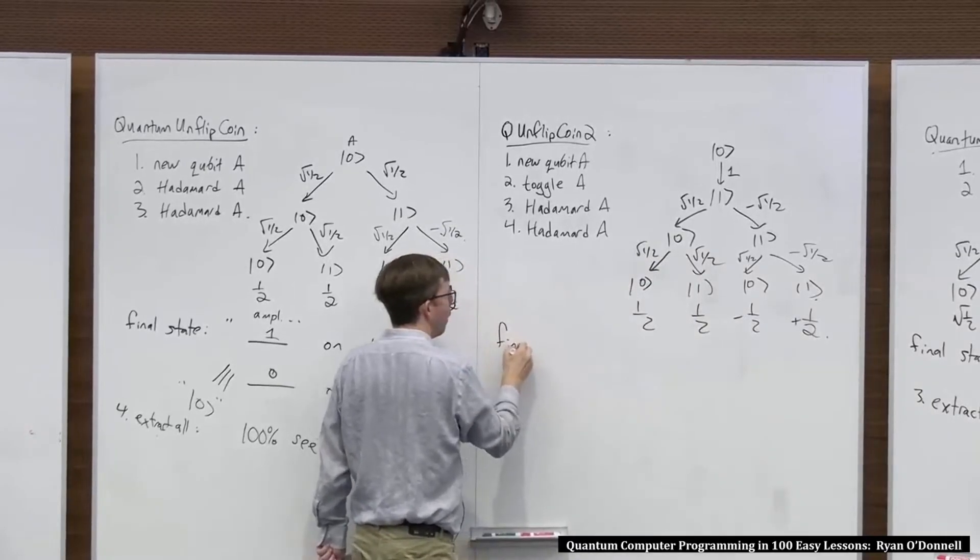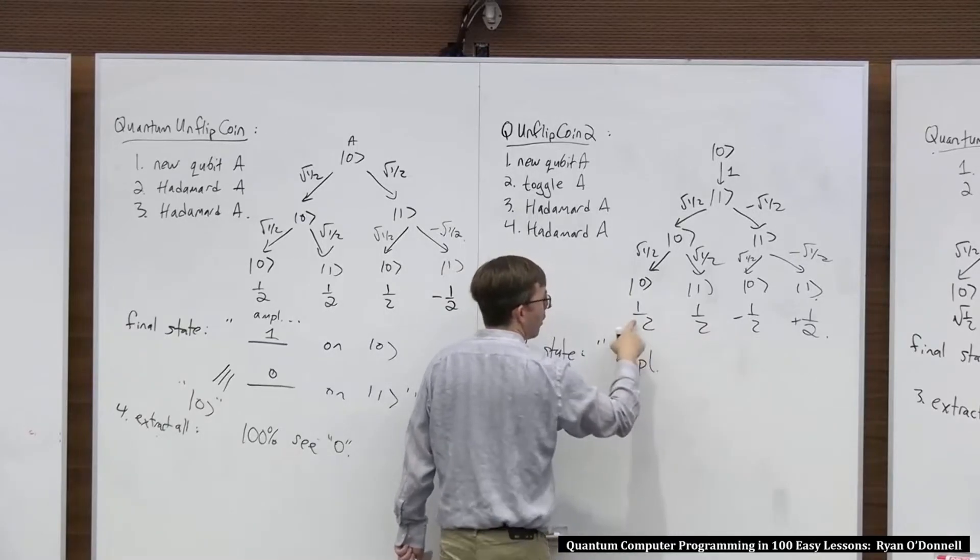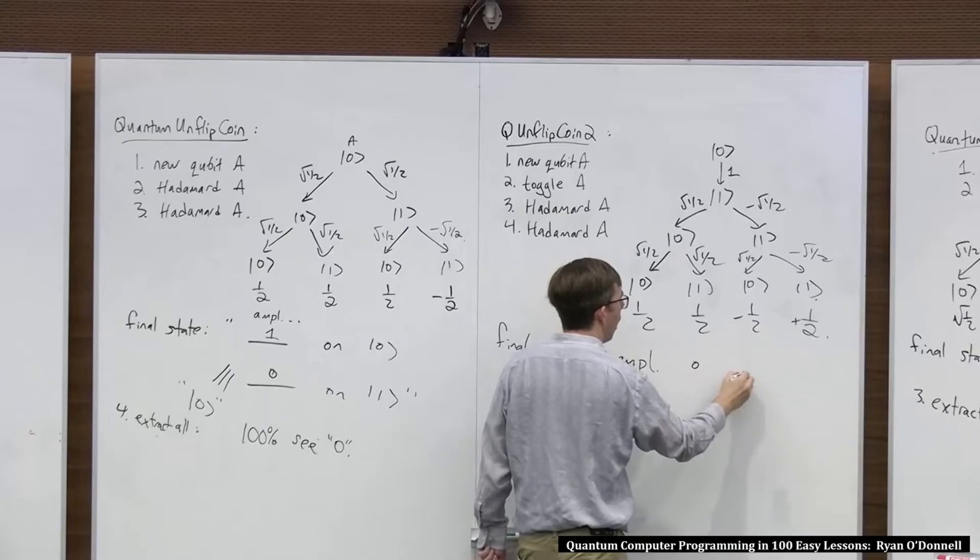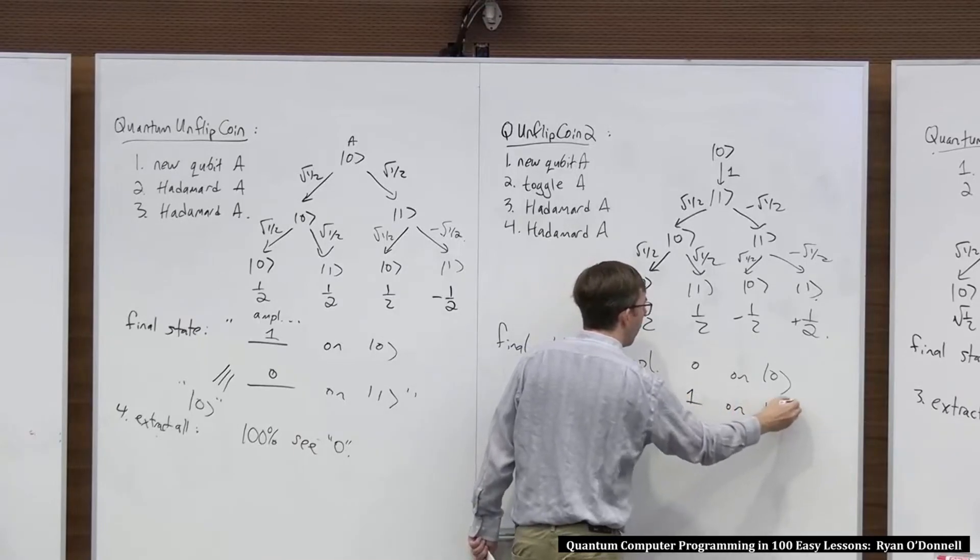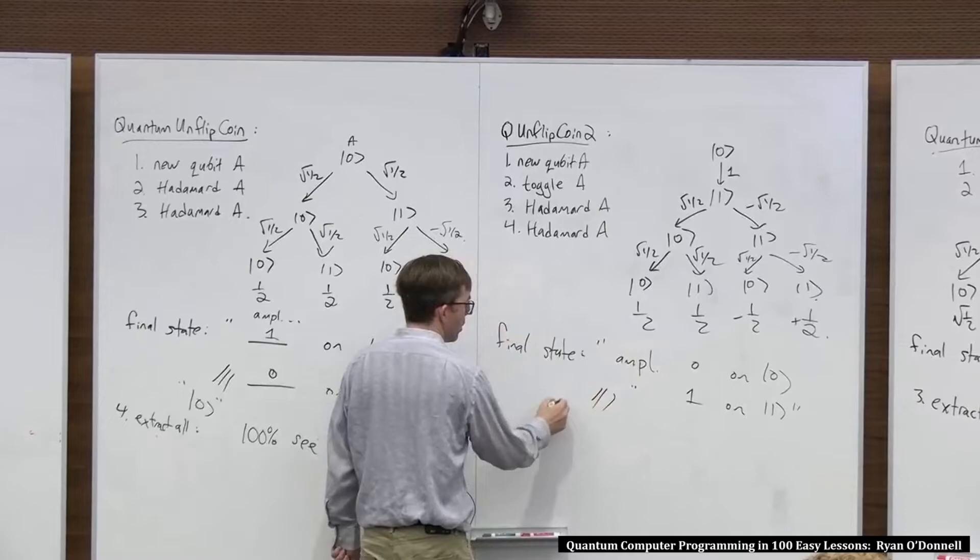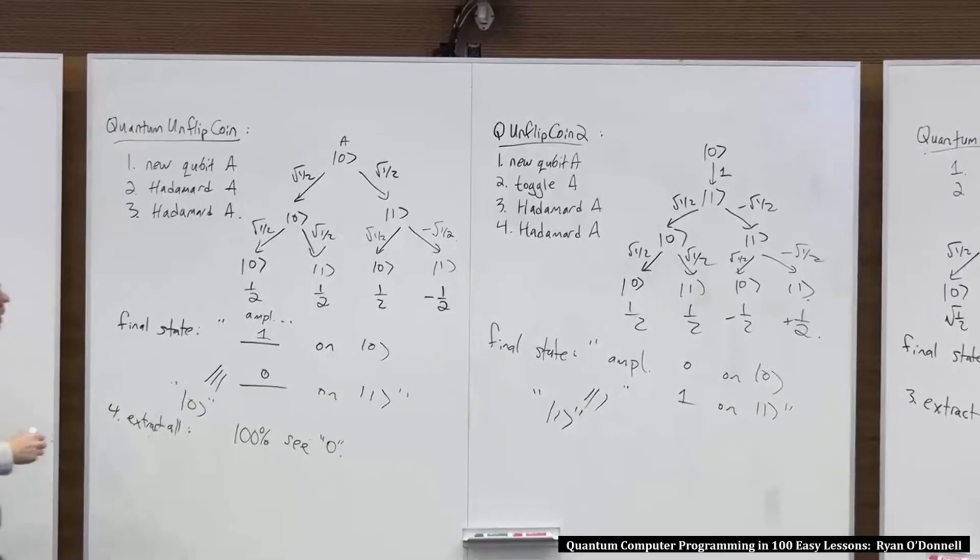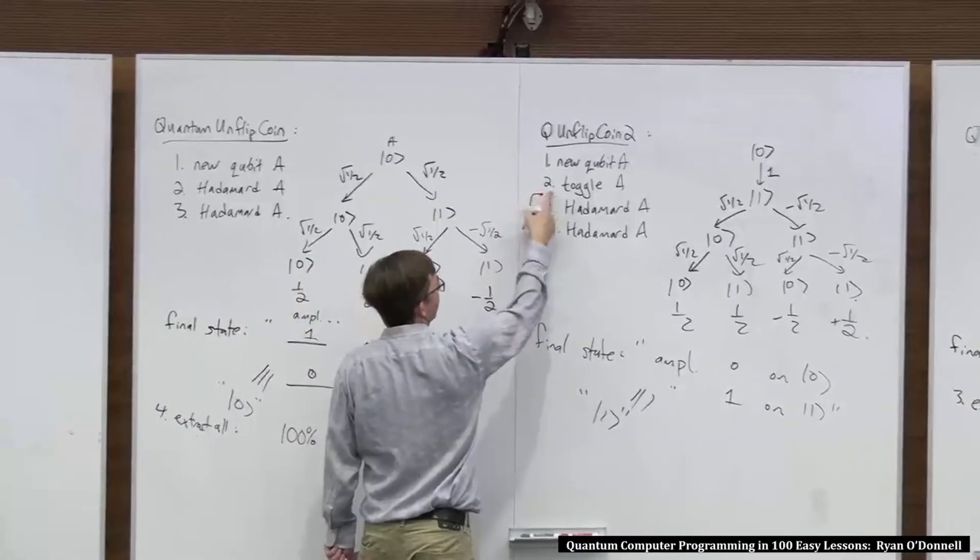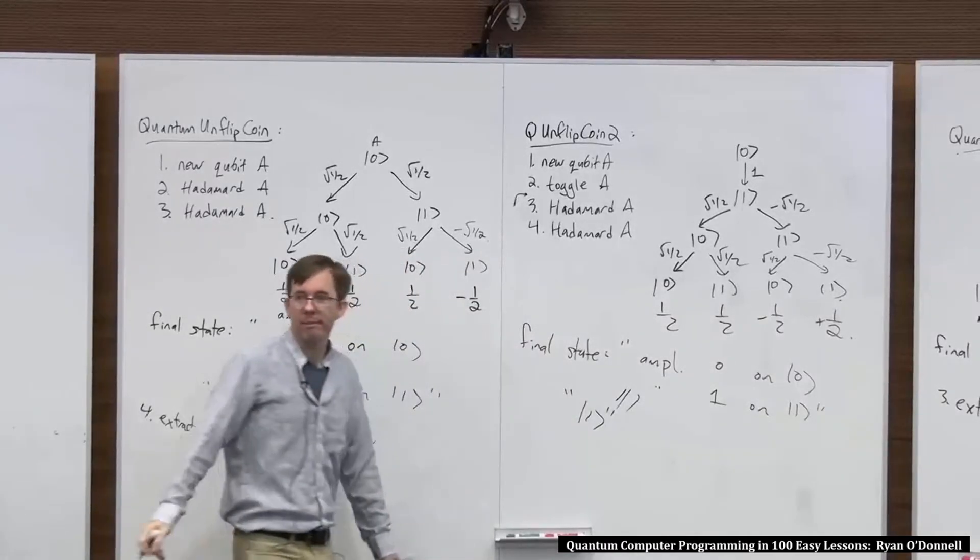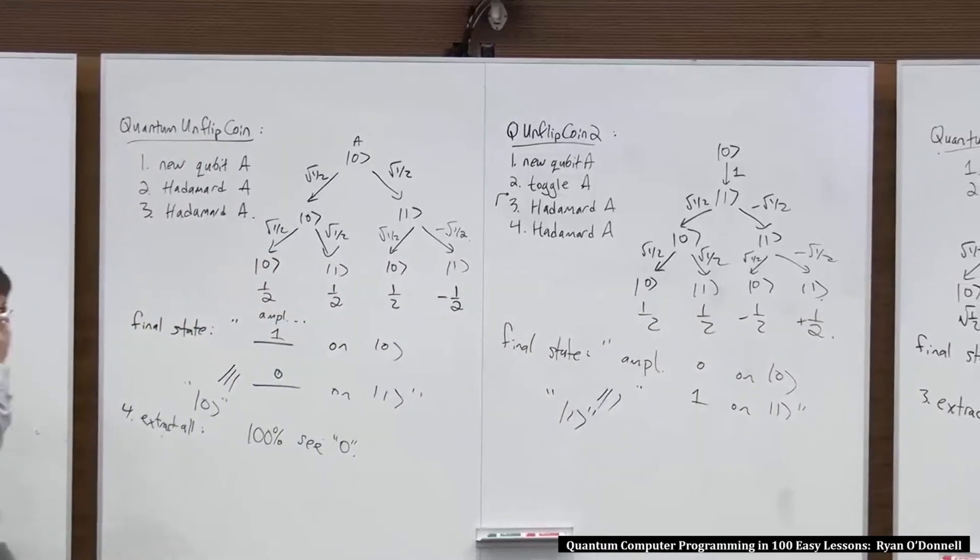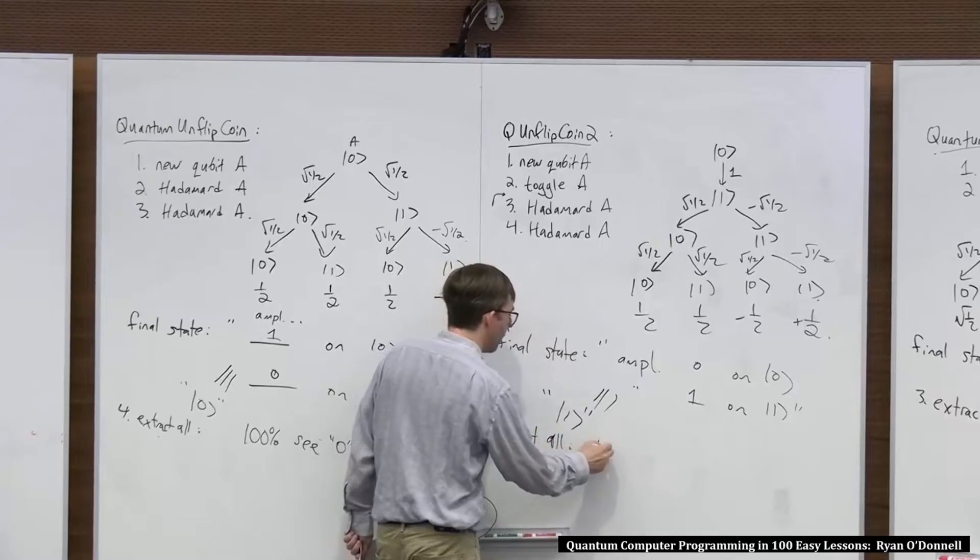So the final state is amplitude on 0, we have a half and negative a half. So we have amplitude 0 on 0. And on 1, we have half and half. So we got amplitude 1 on 1. This is all the amplitude is on 1 and no amplitude on 0. So that's also just called 1. In short, here we kind of started the qubit. This is basically to start the qubit in state 1. We saw that if you start the qubit in state 1 and do two Hadamards, you get to 1 again. And so again, if you were to extract all, you would see a 100% chance of seeing 1.